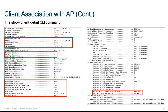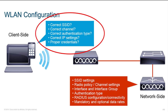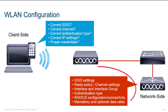If you've checked all the previous areas and it's still not working, look at the wireless LAN configuration. Several items in this area can cause connectivity issues. First is the SSID — the name of the wireless network you're trying to connect to — which may have been typed incorrectly. You might also have the wrong channel set, an incorrect authentication type, incorrect IP settings, or wrong credentials such as an incorrect username and password.